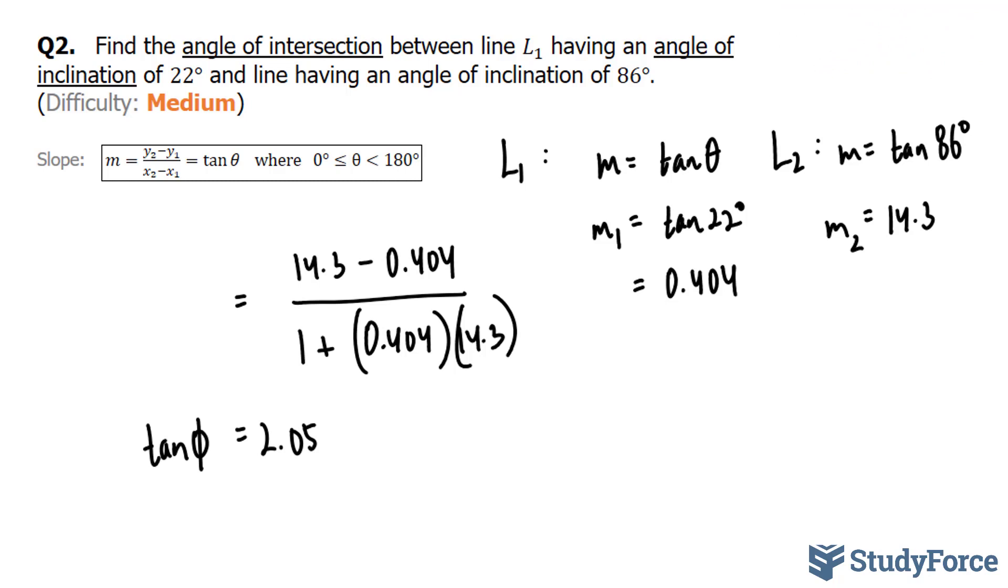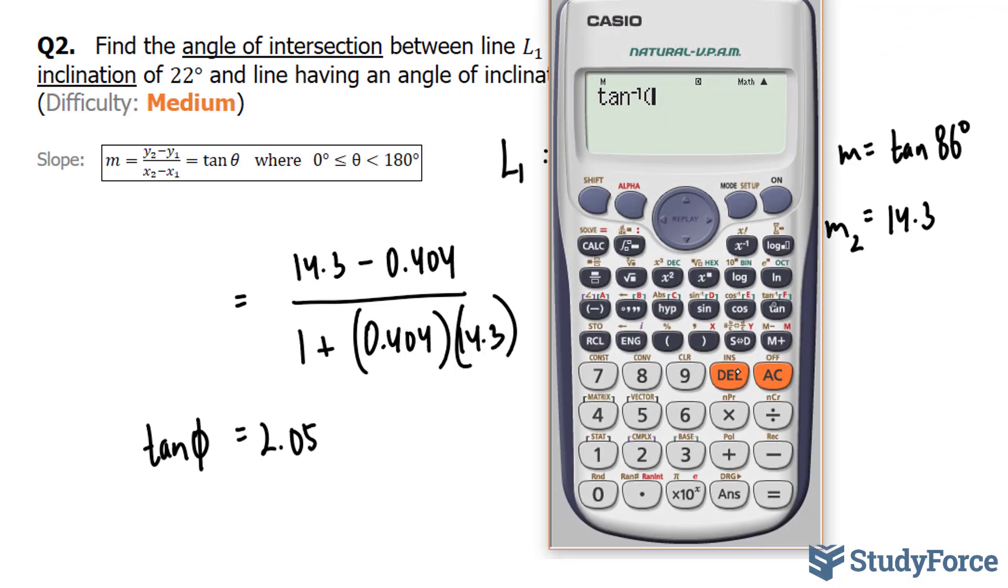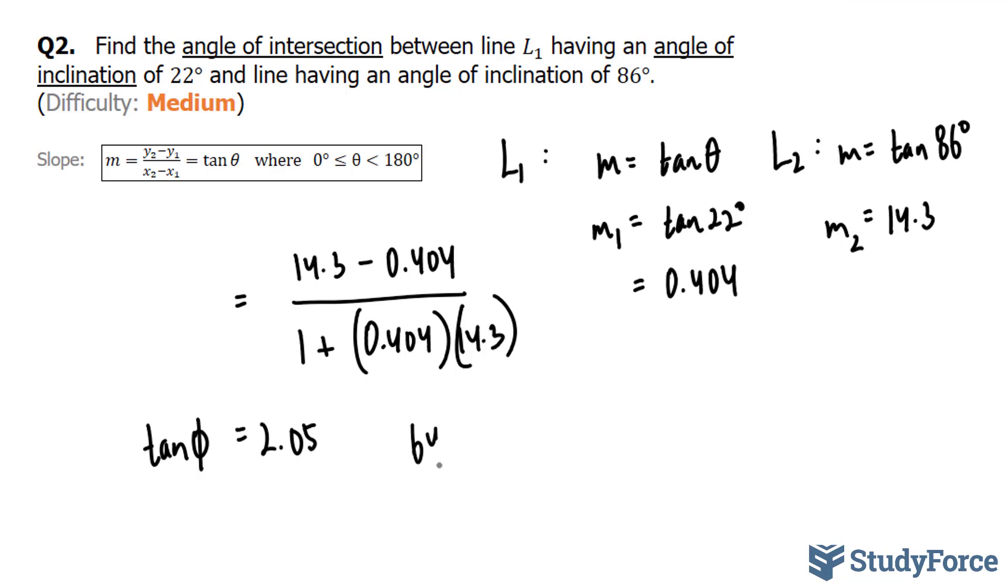Now what we have to do is take the tangent inverse of the right side, tangent inverse of the number that we just calculated, and we end up with 64 degrees. So phi, which represents the angle of intersection, is 64 degrees between these two lines.